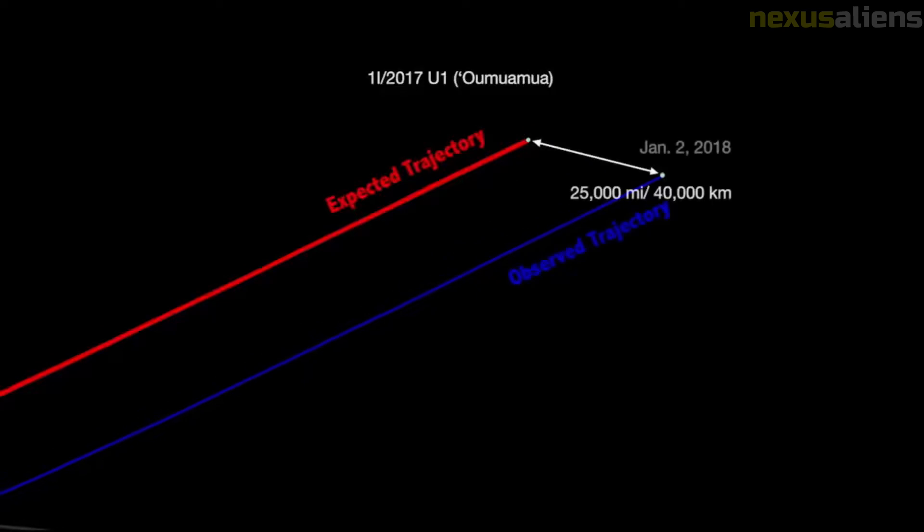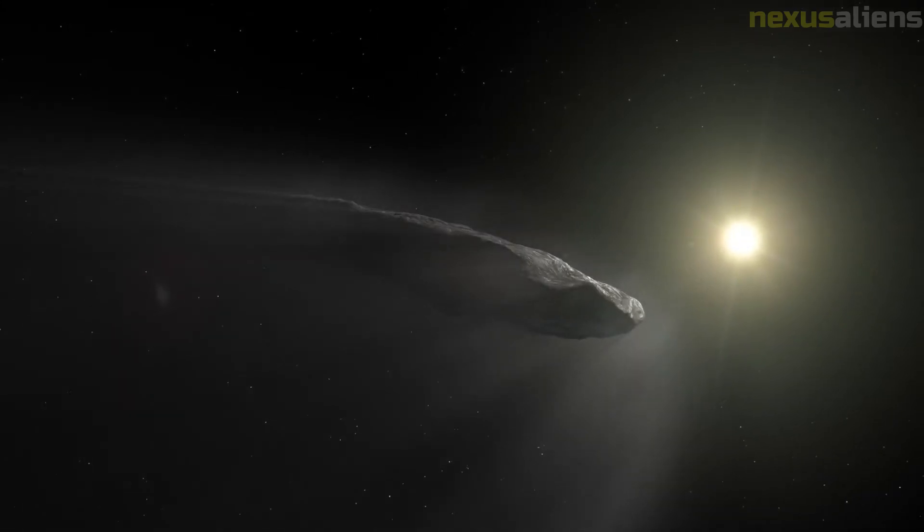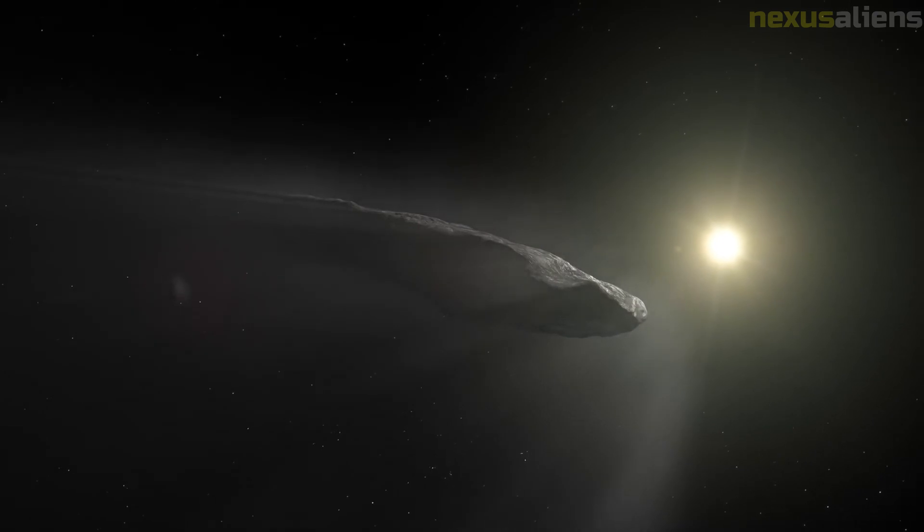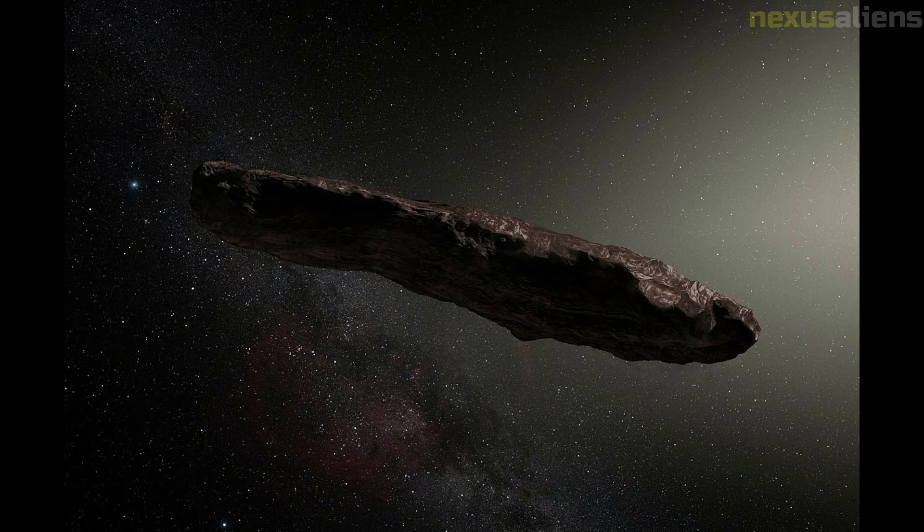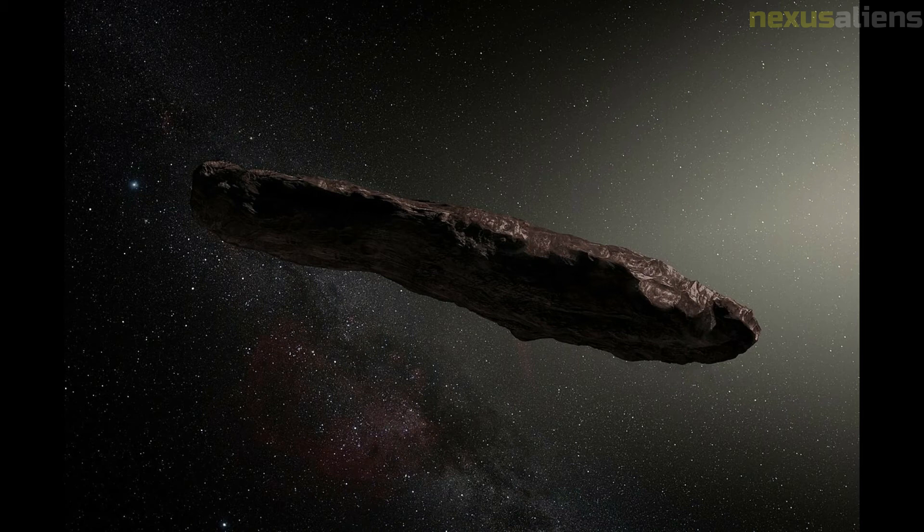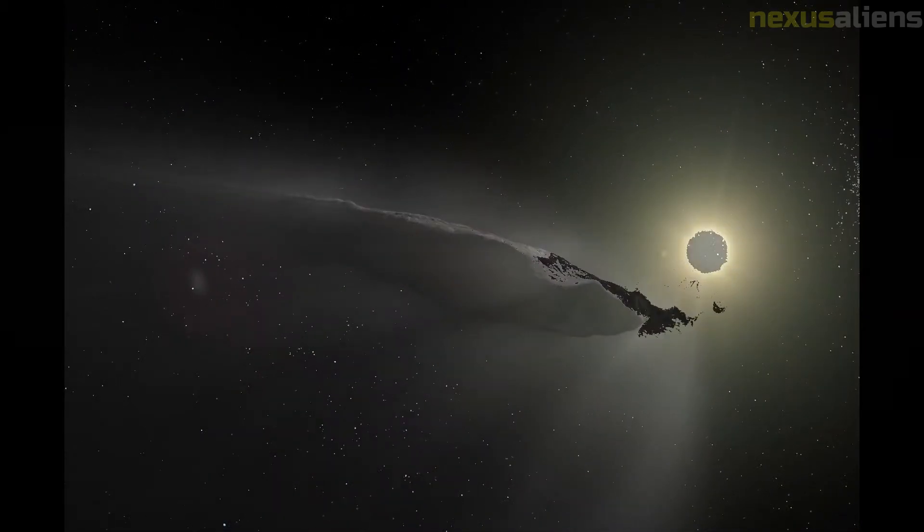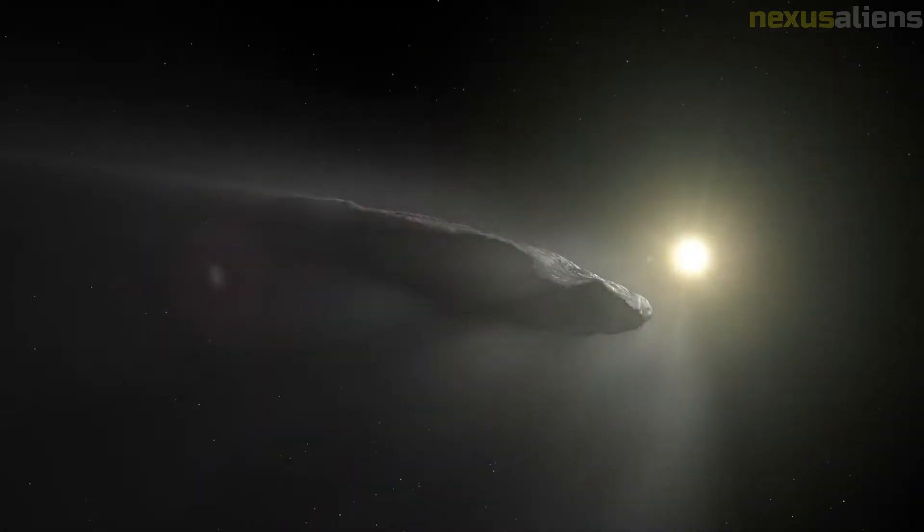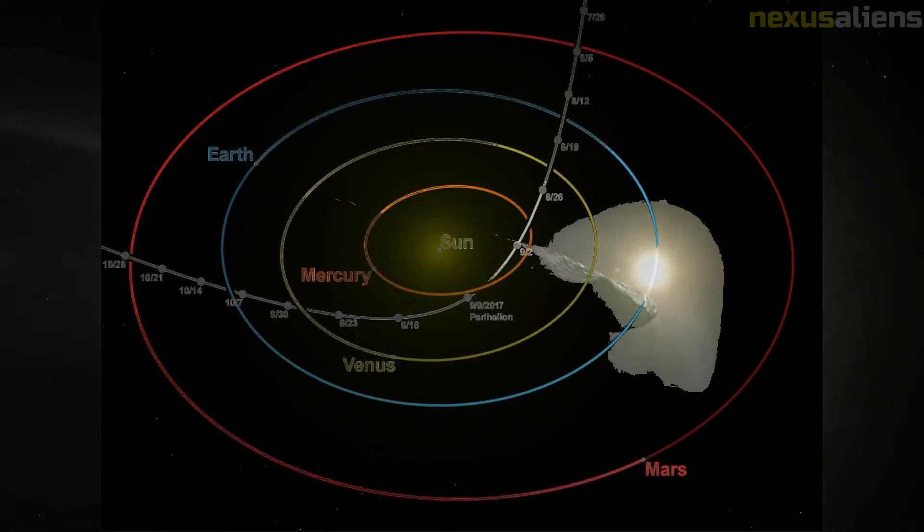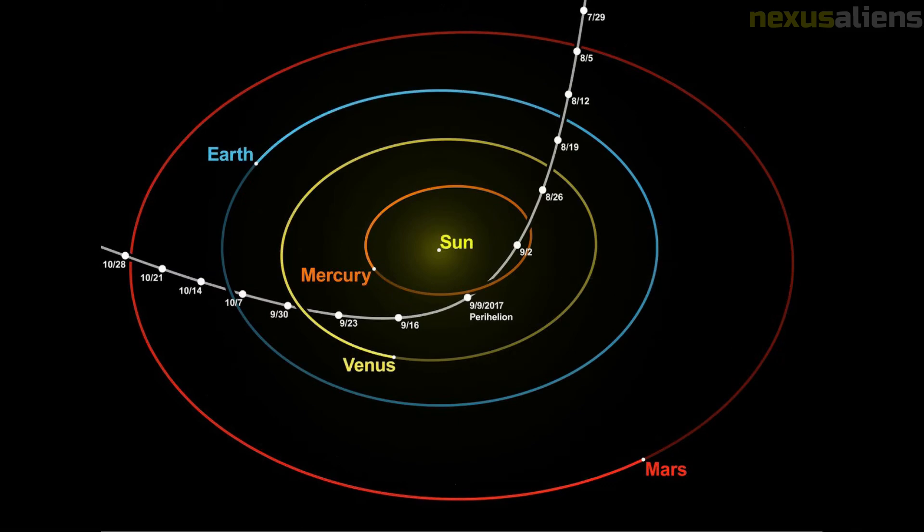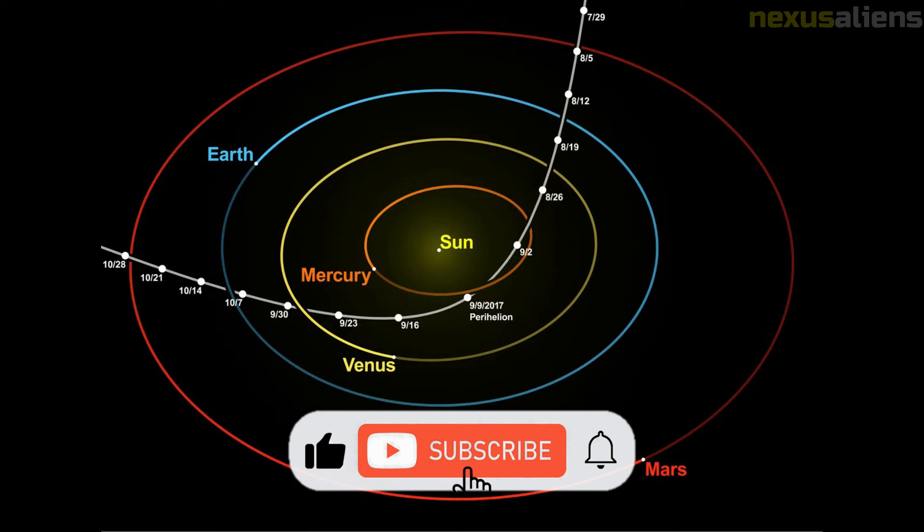Based on observations spanning 80 days, Oumuamua's orbital eccentricity is 1.20, the highest ever observed until 2I/Borisov was discovered in August 2019. An eccentricity exceeding 1.0 means an object exceeds the sun's escape velocity, is not bound to the solar system and may escape to interstellar space. While an eccentricity slightly above 1.0 can be obtained by encounters with planets, as happened with the previous record holder C/1980 E1, Oumuamua's eccentricity is so high that it could not have been obtained through an encounter with any of the planets in the solar system.